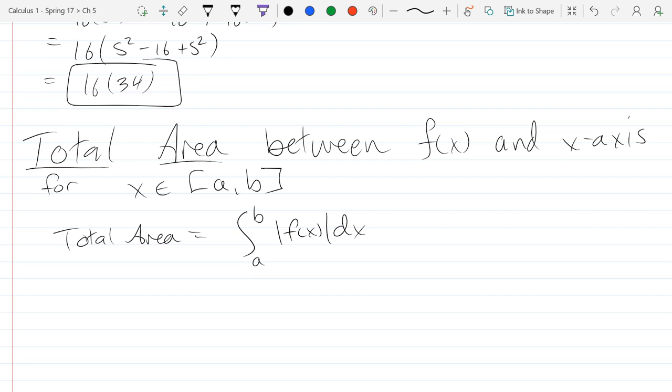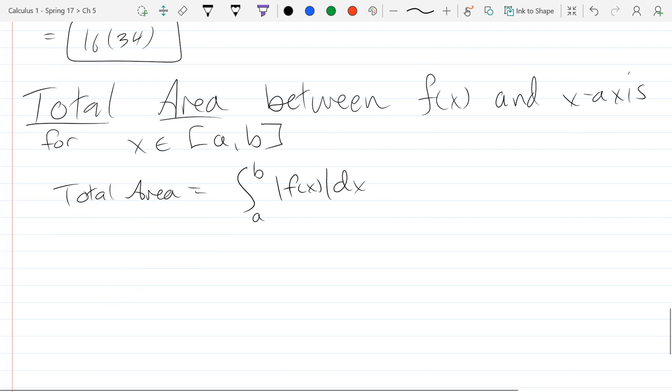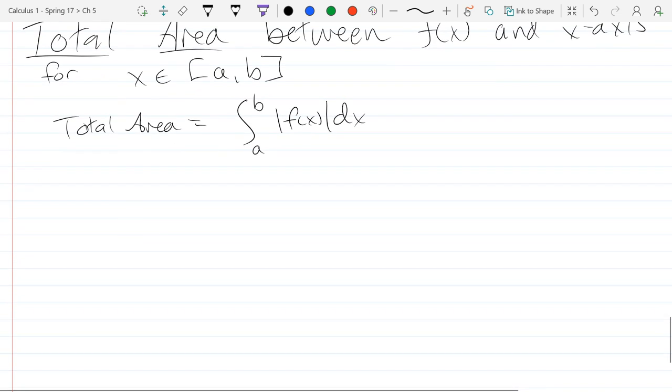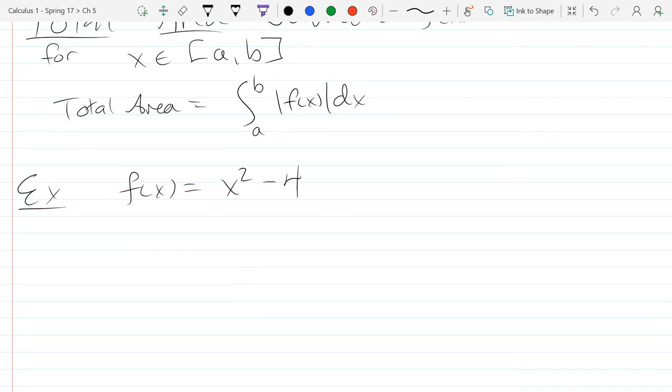So we'll take a function, so our example, we'll go with x squared minus 4, definitely some x values that make this negative, and so let's go 0 to 4. So find total area for x in the interval 0 to 4.